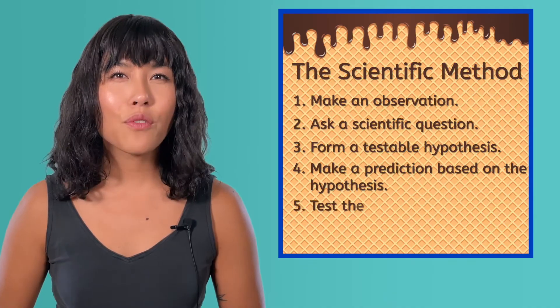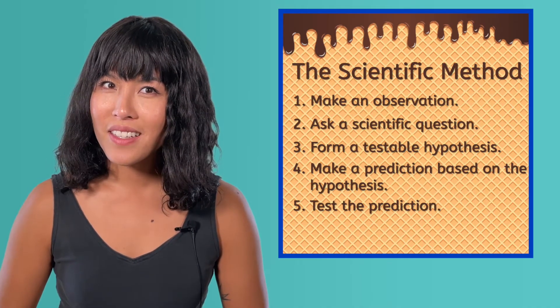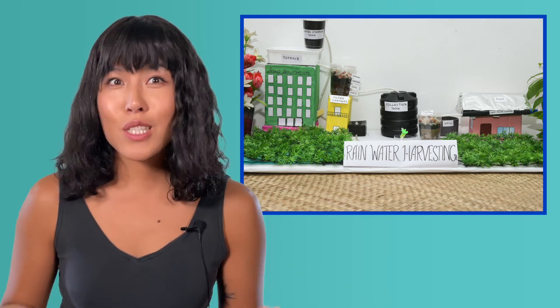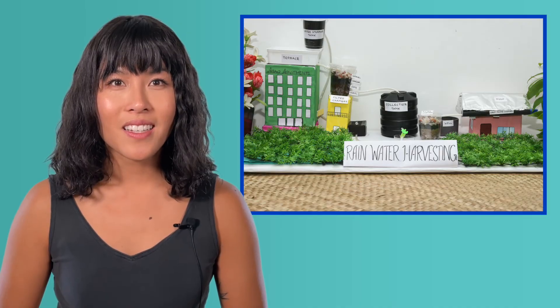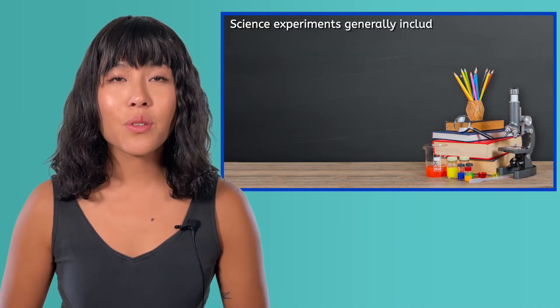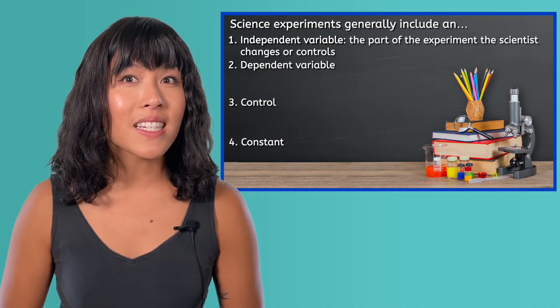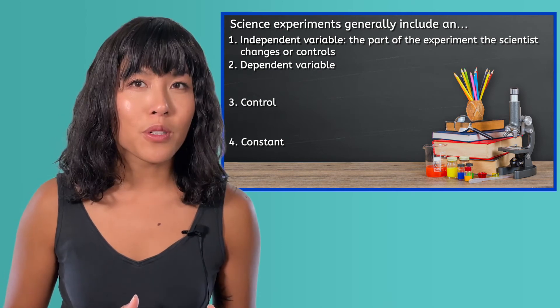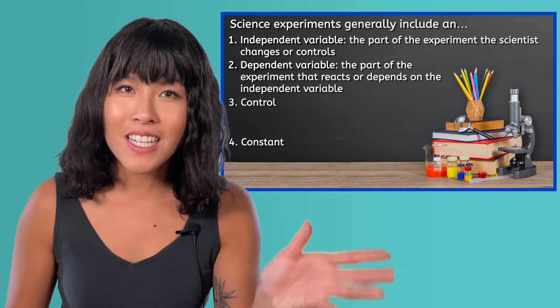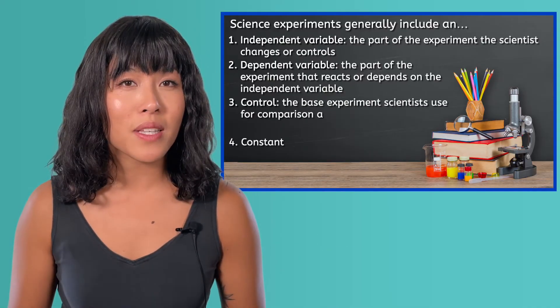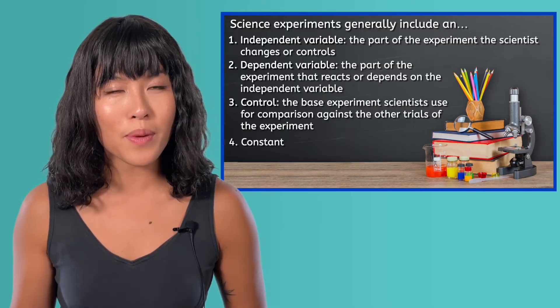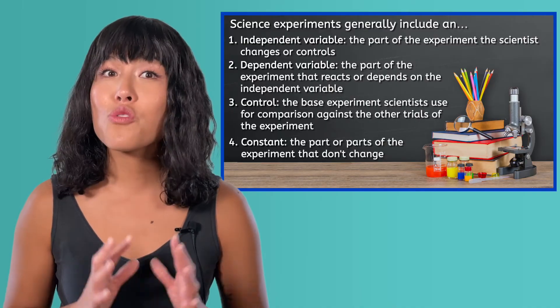Step five of the scientific method tells us that if we want to test our prediction, we need to conduct an experiment. Experiments teach us so much about how the natural world works. However, there are different elements of an experiment that must be included for the results to be accurate and valid. Science experiments generally include an independent variable, dependent variable, control, and constants. An independent variable is the part of the experiment the scientist changes or controls. The dependent variable is the part of the experiment that reacts or depends on the independent variable. The control is the base experiment scientists use for comparison against the other trials. A constant is the part or parts that don't change during the experiment.